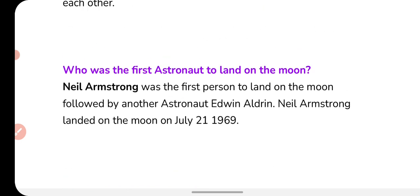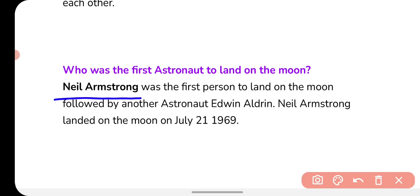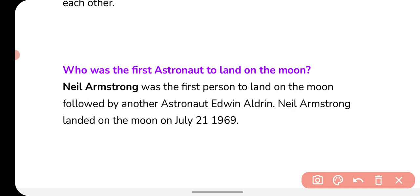Who was the first astronaut to land on the moon? Neil Armstrong was the first person to land on the moon, followed by another astronaut, Edwin Aldrin. They landed on July 21st, 1969.